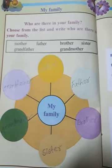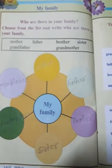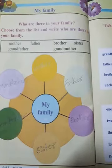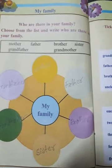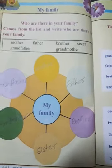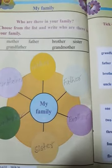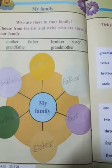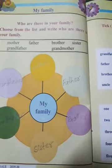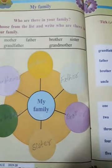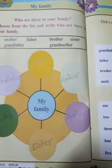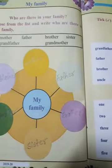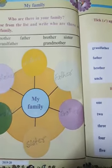You also learned about family members — how many members are there in your family. It might be four, three, or five: mother, father, yourself, and your younger or elder sibling, brother or sister, uncle or aunt, and cousins. Cousins means your aunt's or uncle's daughters or sons — they are called cousins.